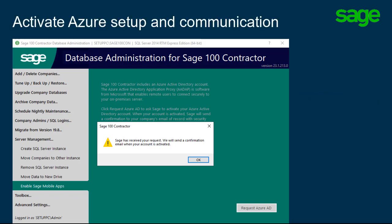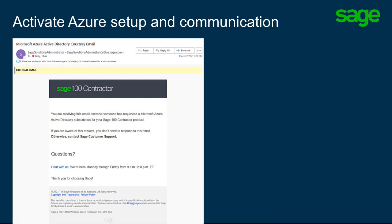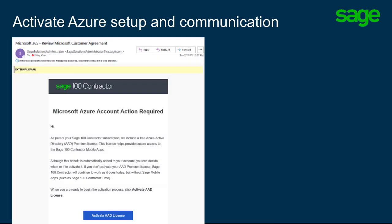You receive two emails. The first is a courtesy notice. The second email you receive looks similar to the one shown here. Click Activate AAD License to begin.